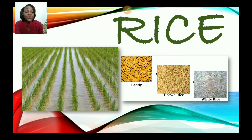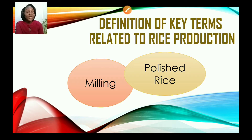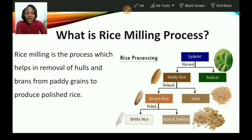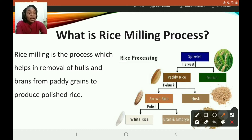Now we're going to look at rice in detail. Let us look at some definitions of key terms related to rice production. Rice milling is the process which helps in the removal of hulls and bran from paddy grains to produce polished rice. After the rice has been harvested it is called paddy rice. It then goes through a process of husking to produce brown rice, and later white rice.